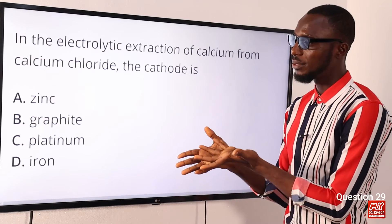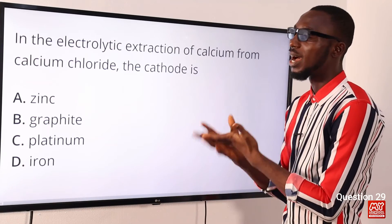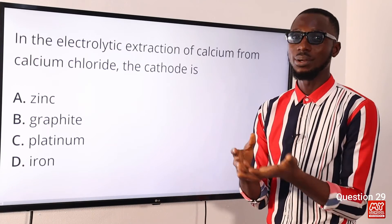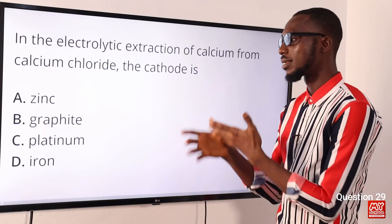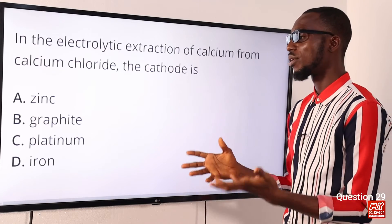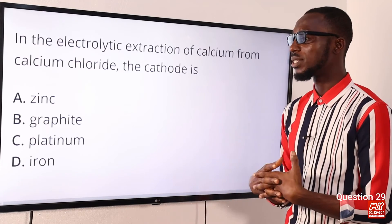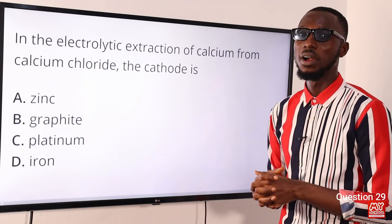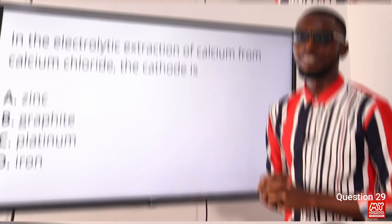Question 29: In the electrolytic extraction of calcium from calcium chloride, the cathode is what? The cathode is iron and the anode is graphite. The correct option is option D: iron.